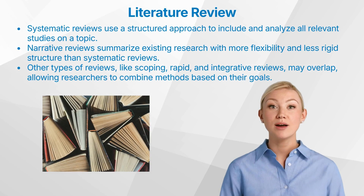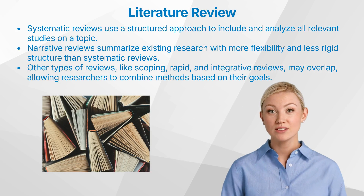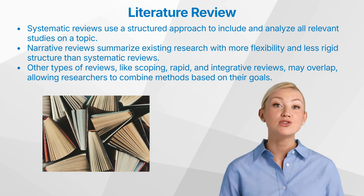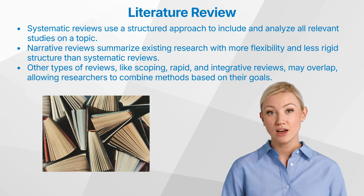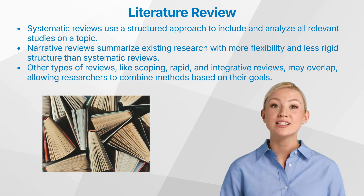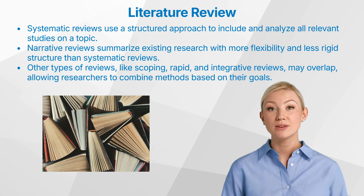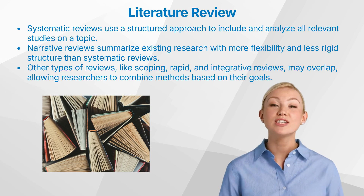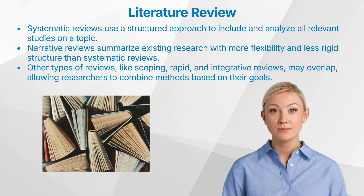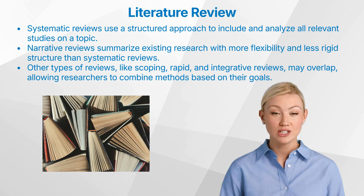There are two primary types of literature reviews: systematic reviews and narrative reviews. Systematic reviews follow a structured approach to identify and analyze all relevant studies on a given topic, providing a comprehensive overview of the literature and ensuring that all evidence is included. Narrative reviews, on the other hand, offer a summary of existing research without the rigid structure of a systematic review, and are more flexible and can be adapted to the researcher's needs.